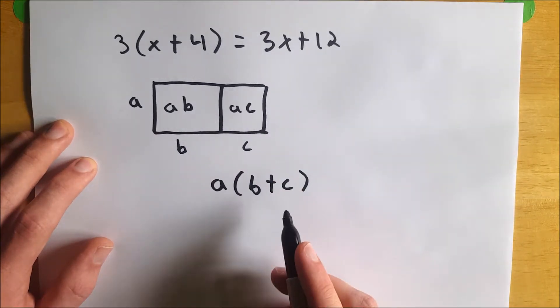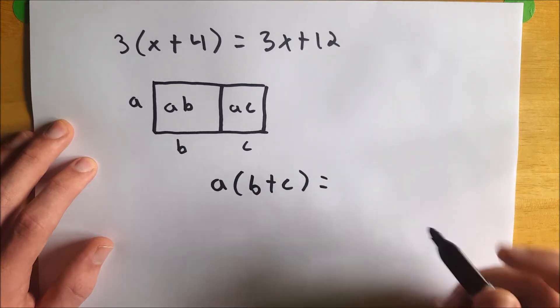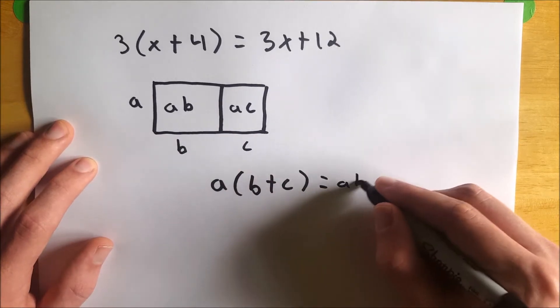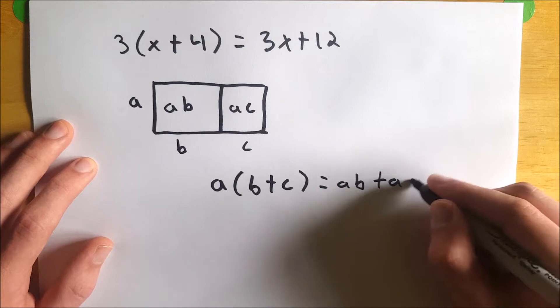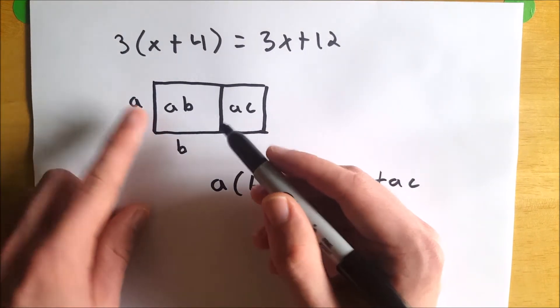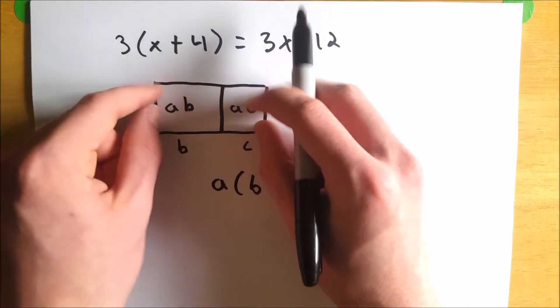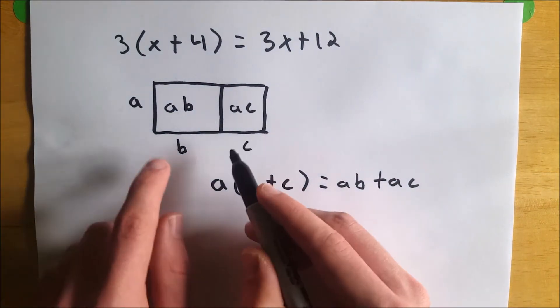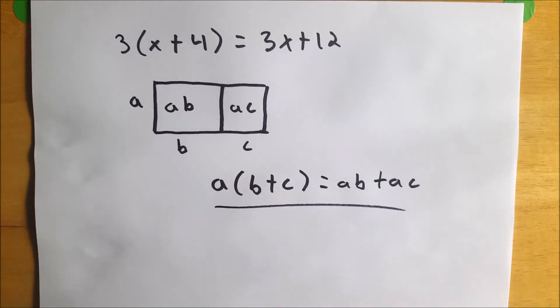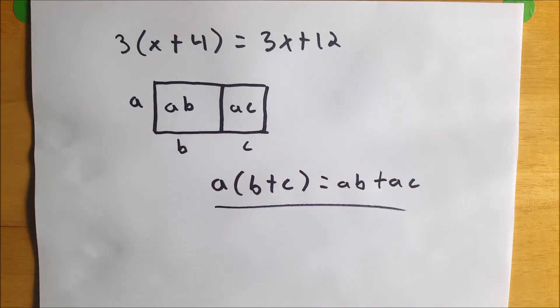So you can see this is a scenario in which we would need the distributive property. And we also know that the area of this rectangle is ab right here, plus ac, which is right here. And you see how we did that: base times height for the area of this rectangle, base times height for the area of this rectangle, you add them up, you get the area of the whole rectangle. And then for this expression, we have base, which is b plus c, times height, which is a, and we get the truth behind the distributive property, which is a times (b plus c) is equal to ab plus ac.